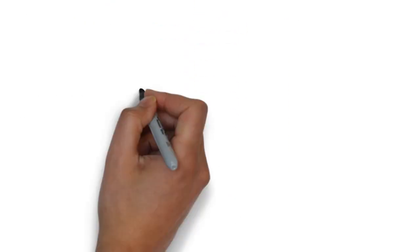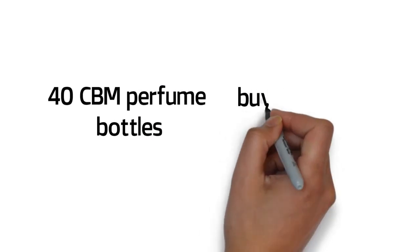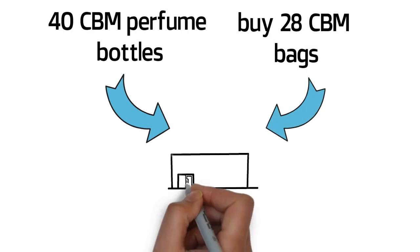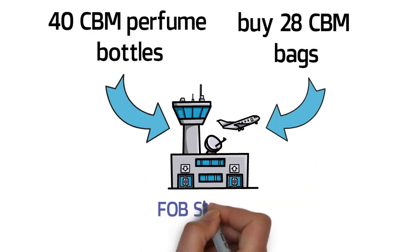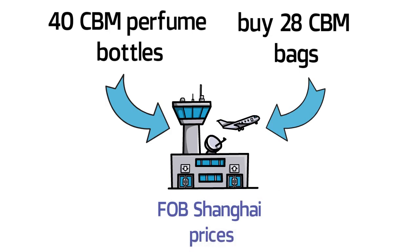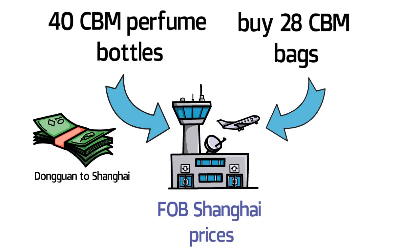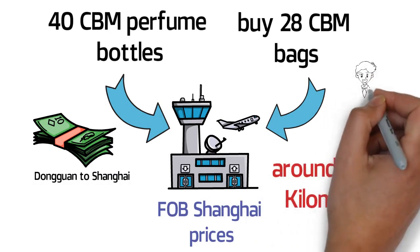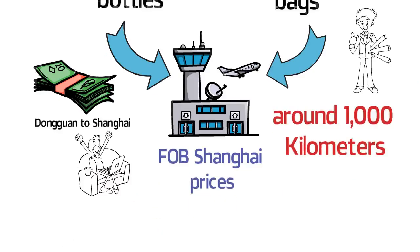Here is an example. Let's say you find two suppliers — one in Dongguan in the south of China, who will quote you the FOB Shenzhen price, because Shenzhen is less than 100 kilometers away. A supplier from Suzhou would typically quote you the FOB Shanghai price, as it's less than 100 kilometers from Shanghai. Suppose you buy 40 CBM perfume bottles from Suzhou and 28 CBM bags from Dongguan. You could load both on the same port, but asking both for FOB Shanghai means extra cost to ship the bags 1,000 kilometers from Dongguan. Instead, consider replacing the Dongguan supplier with one closer to Shanghai.